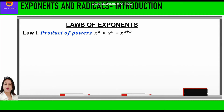The first law is product of powers, which says x raised to power a into x raised to power b is equal to x raised to power a plus b. That means whenever two exponents are multiplied, we add the powers. The second law is quotient of powers, which says x raised to power a divided by x raised to power b is equal to x raised to power a minus b. So whenever we have to divide the exponents, we subtract the powers.